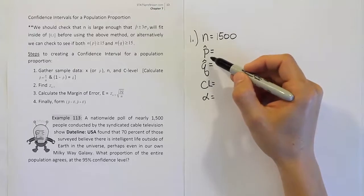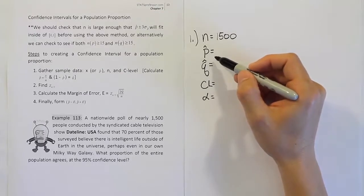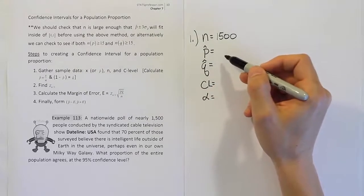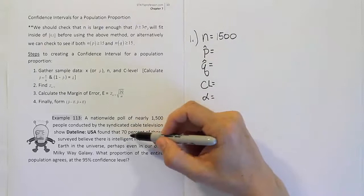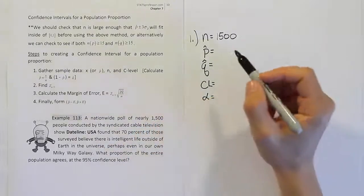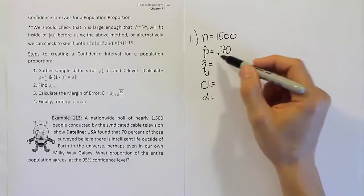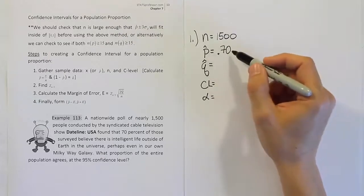The p-hat is the sample proportion. So in this study of 1,500 people, some percent of them felt that there's alien life in the universe. It says here 70% of those surveyed believe there's intelligent life. So we're going to say 0.70 for the proportion who believe in aliens.